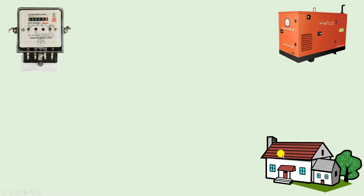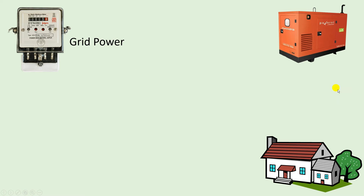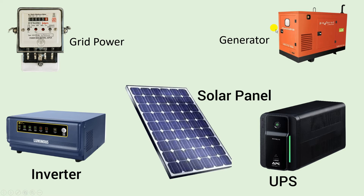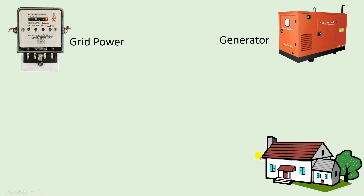Power supply which comes to our home comes through the grid power supply, that is through the energy meter. Now if the grid power supply somehow fails — there's a power cut — then in this condition, auxiliary power supply like a generator, UPS, inverter, or solar panel power supply is used to run electrical devices connected in our home.